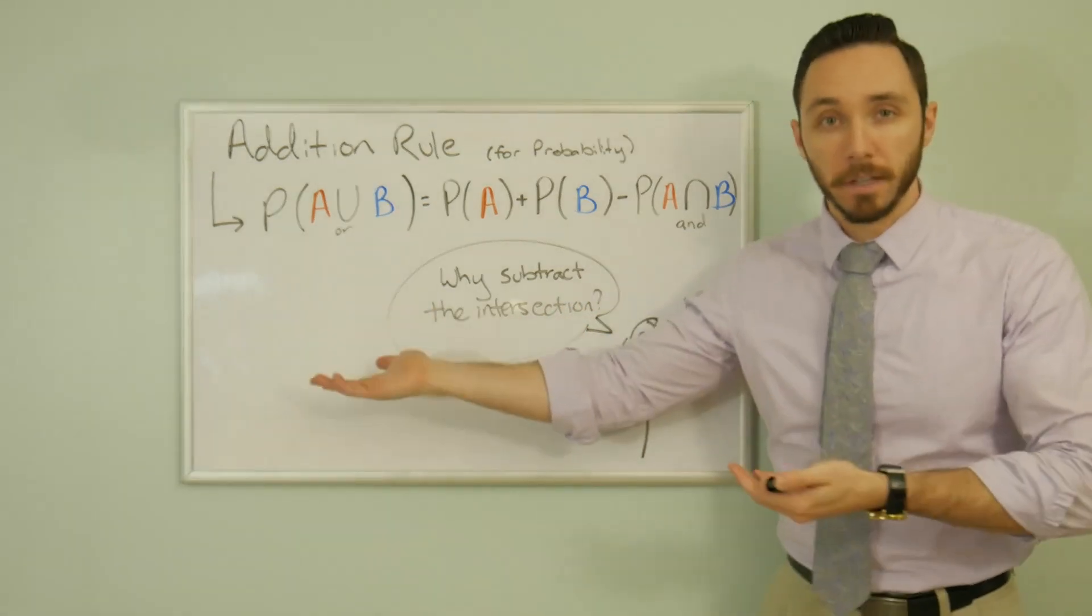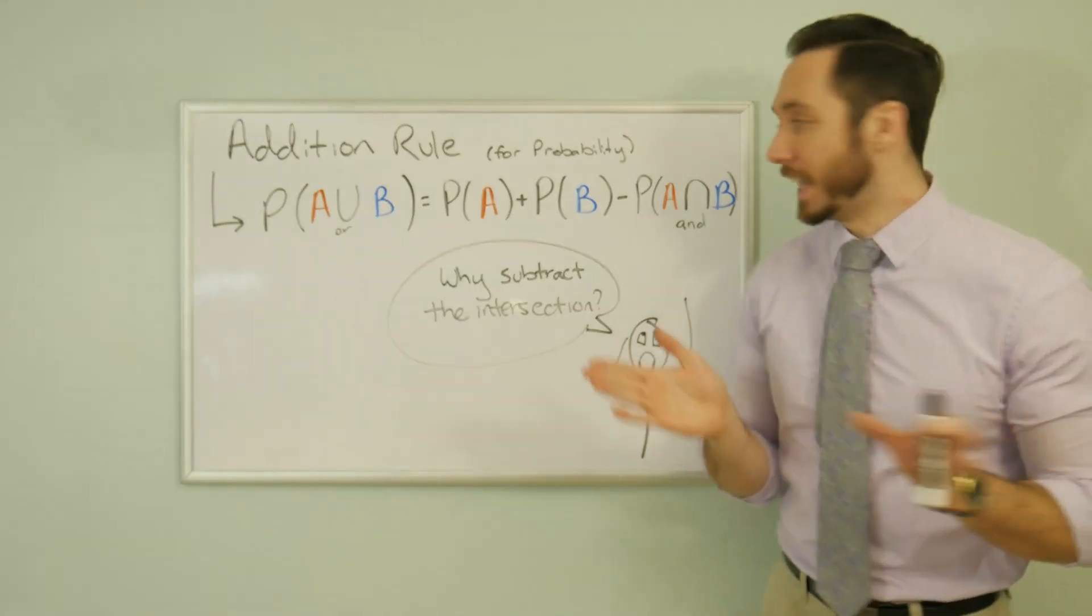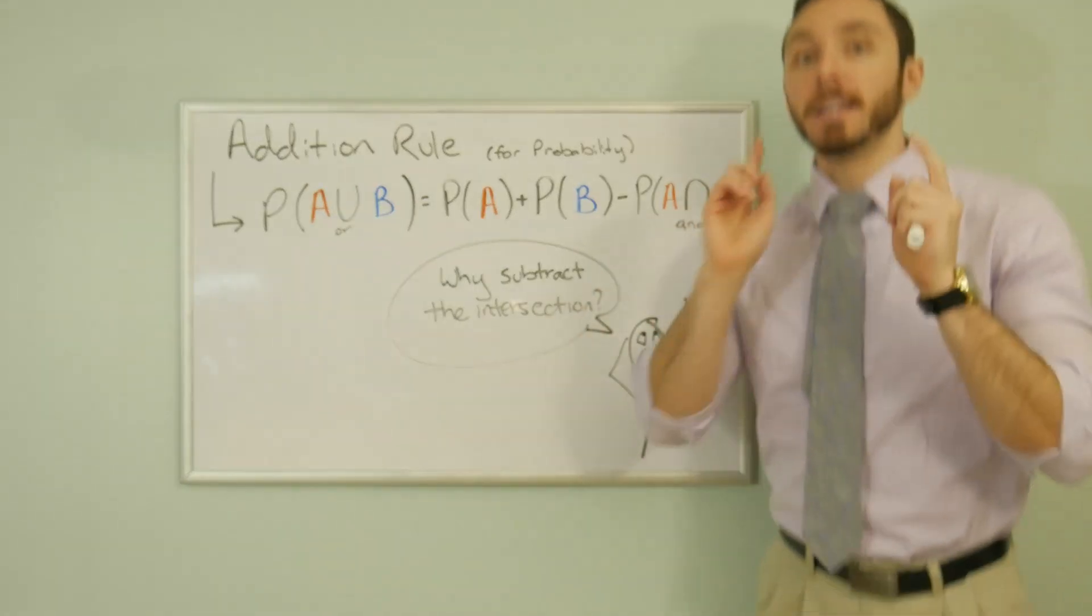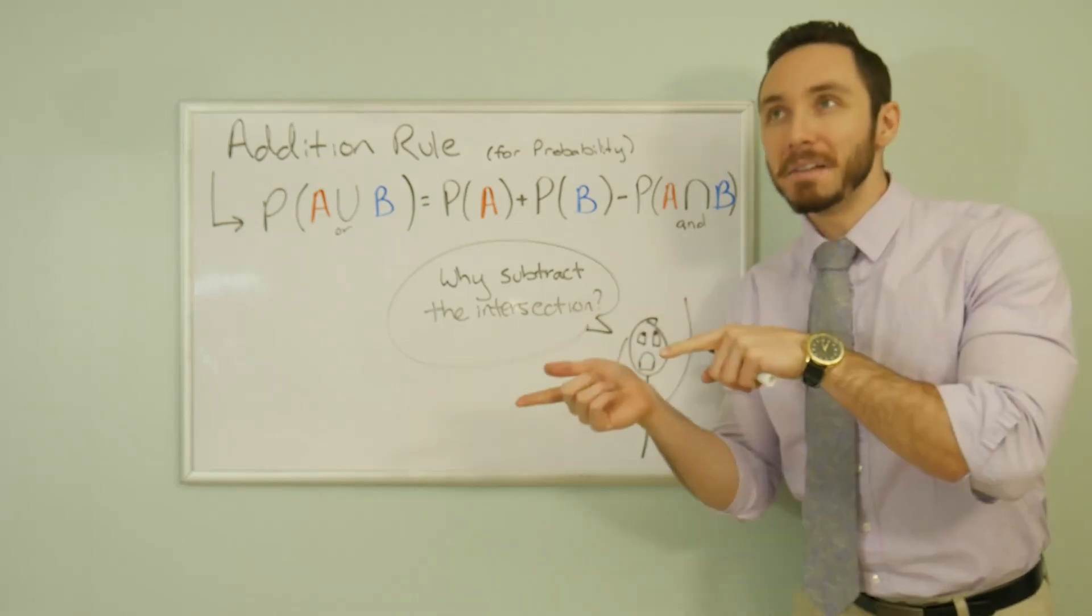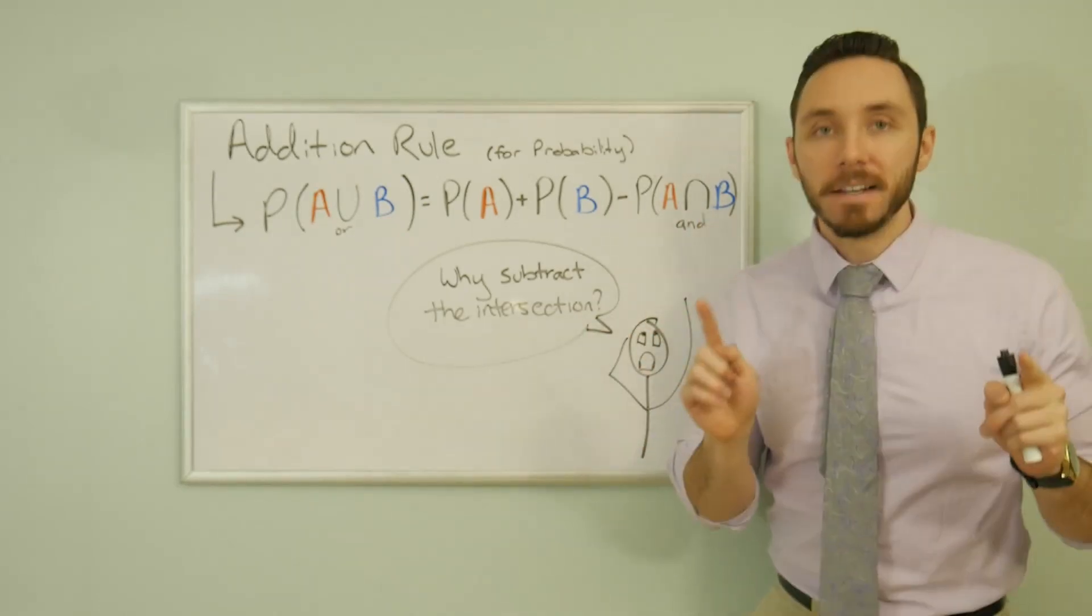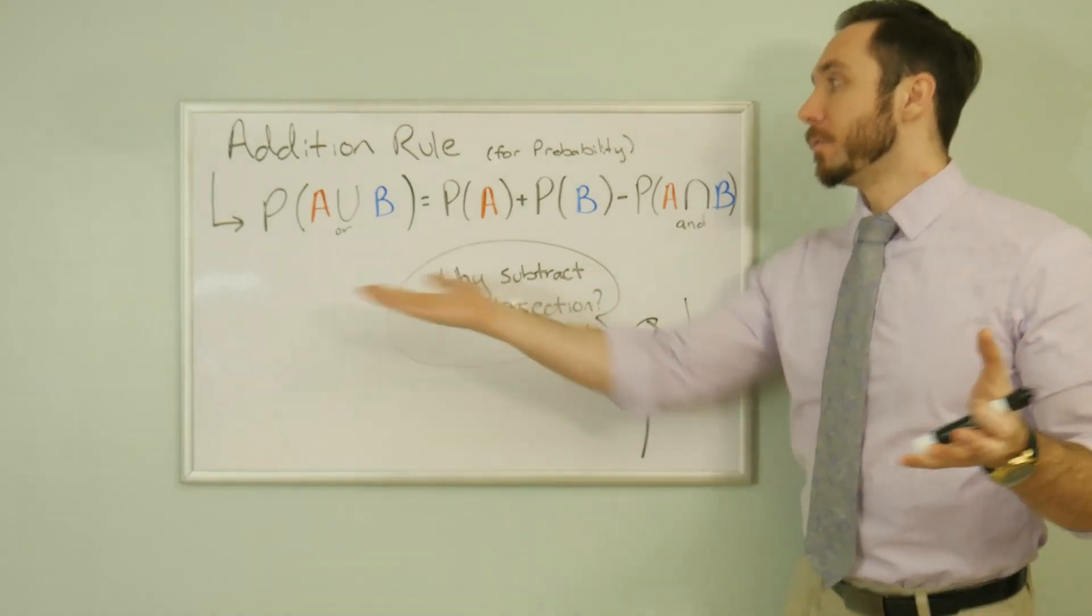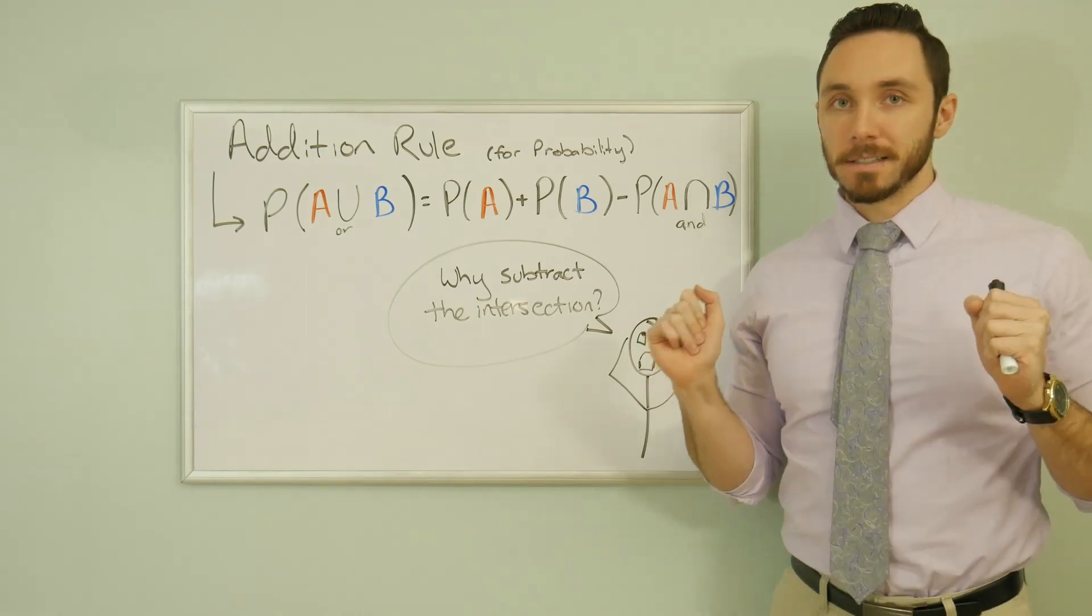No. Wrong. Incorrect. You need to subtract off the intersection, and let me show you why. We need it, but we need to subtract off it, and it seems a little strange, but a Venn diagram is going to help us see and enlighten us to why the addition rule is as such.